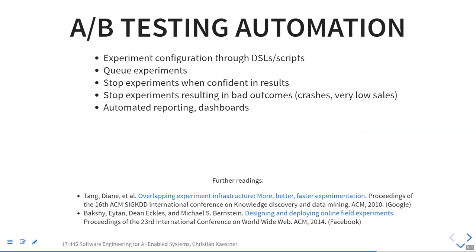There's also a lot of technology for automating this. Often it comes with those services, which have a lot of infrastructure. Companies like Google and Facebook have their own A/B testing frameworks. The concerns they usually have are queuing — Facebook and Google run hundreds of experiments concurrently — so they queue experiments. They stop experiments automatically once they have confident results, or stop experiments with bad outcomes early. Then they have reporting and dashboards.